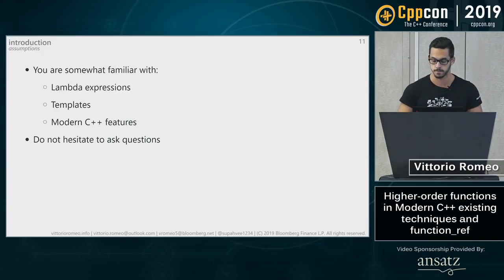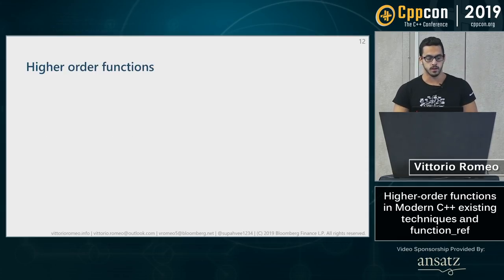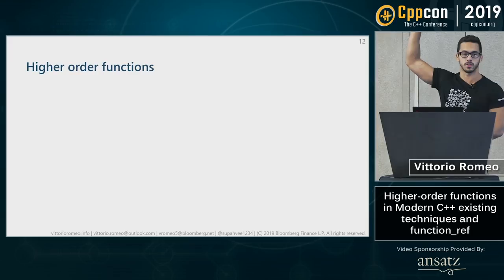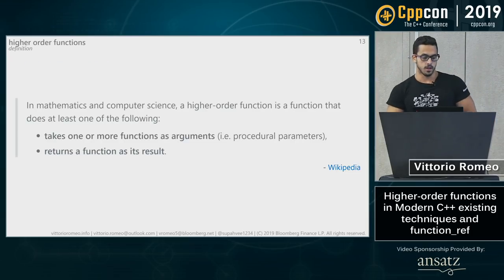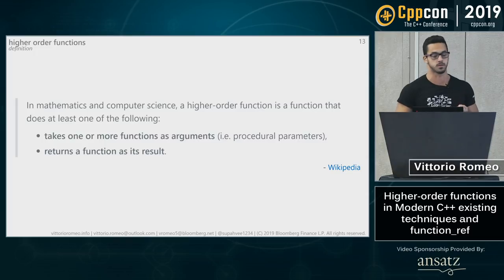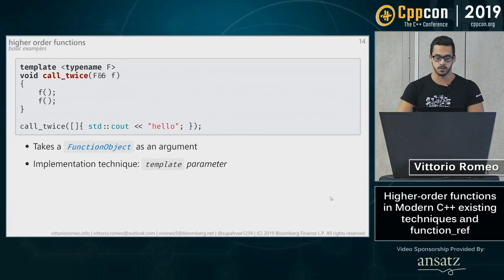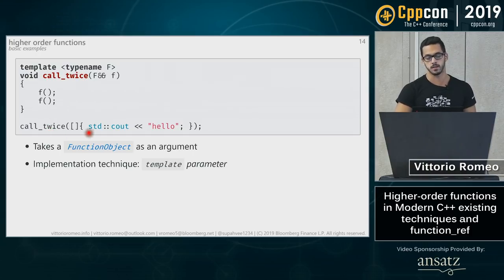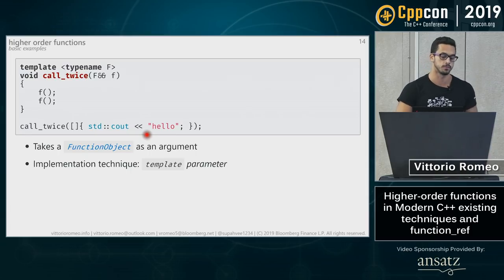Let's begin with the idea of higher-order functions. Wikipedia says: in mathematics and computer science, a higher-order function is a function that does at least one of the following — it either takes one or more functions as arguments, or it returns a function as its result. A simple example is a function called 'call_twice': we accept some callable object F and invoke it twice. Passing a lambda that prints 'hello' results in 'hello hello'.